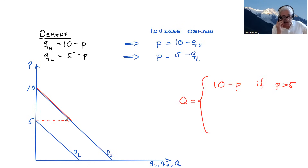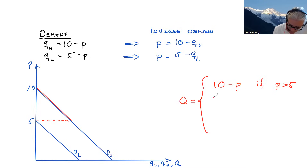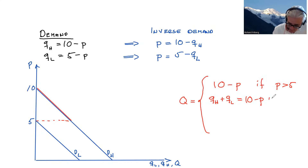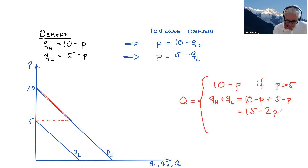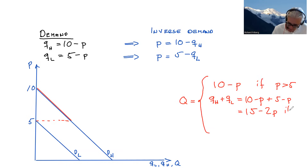If price is below five, however, we will have demand from both persons. So then we have Q equals qH plus qL, which equals 10 minus p plus 5 minus p, giving us 15 minus 2p. And to be clear, this applies when p is less than or equal to five.